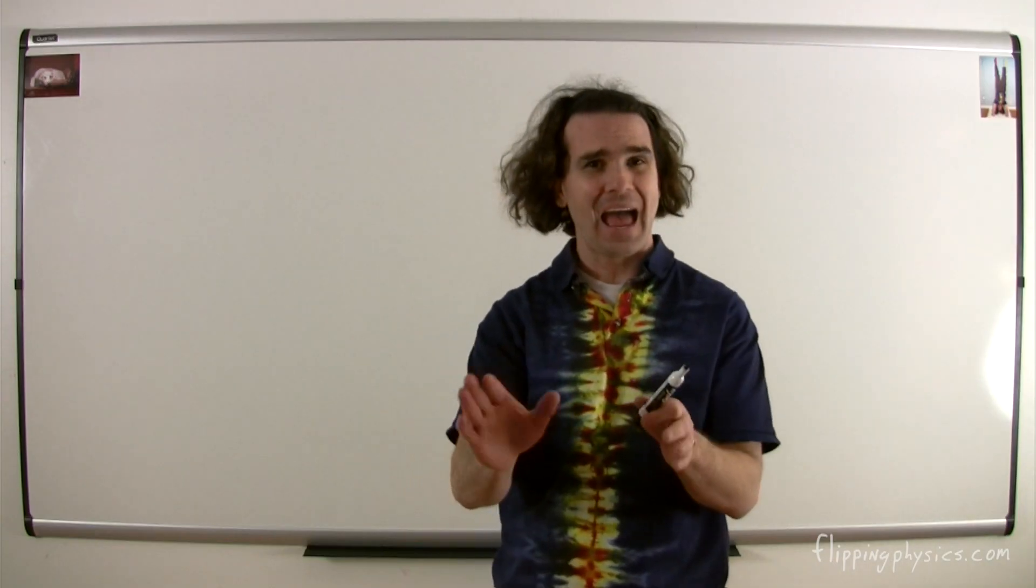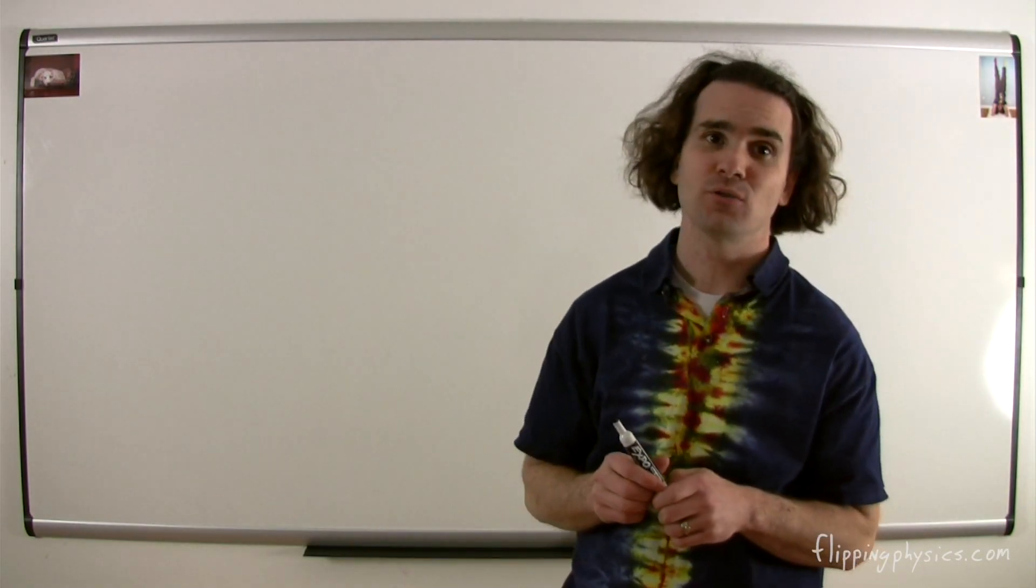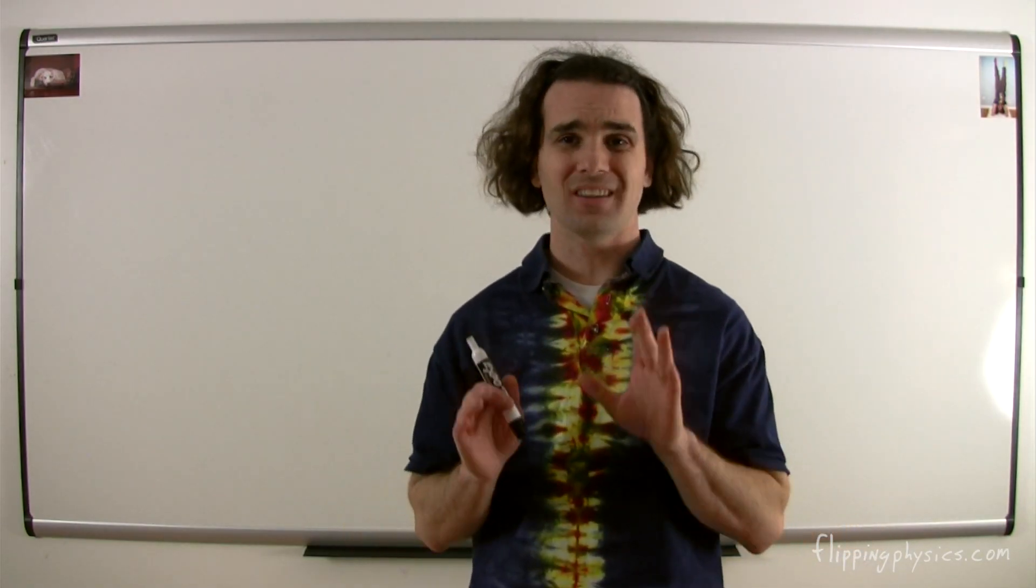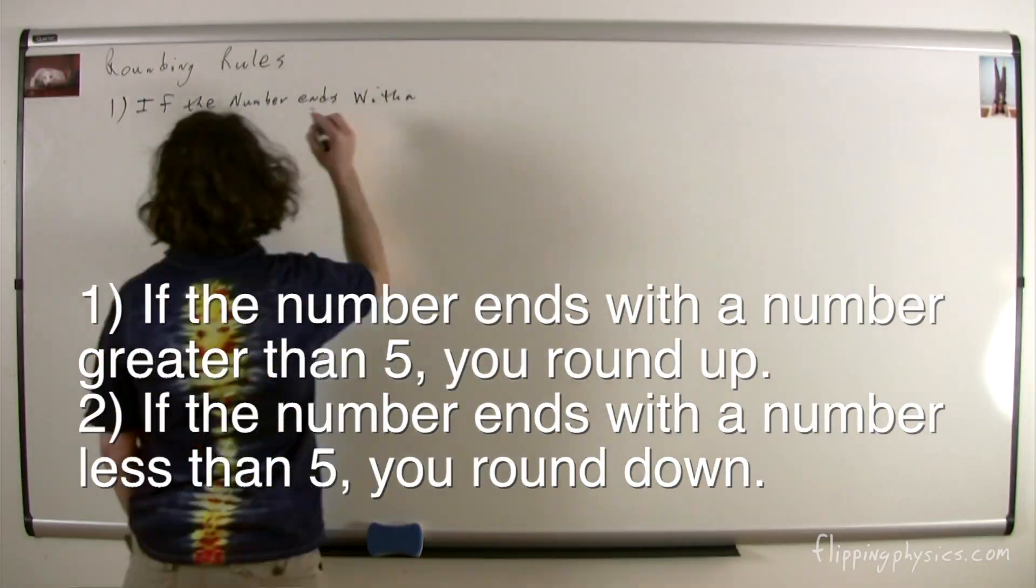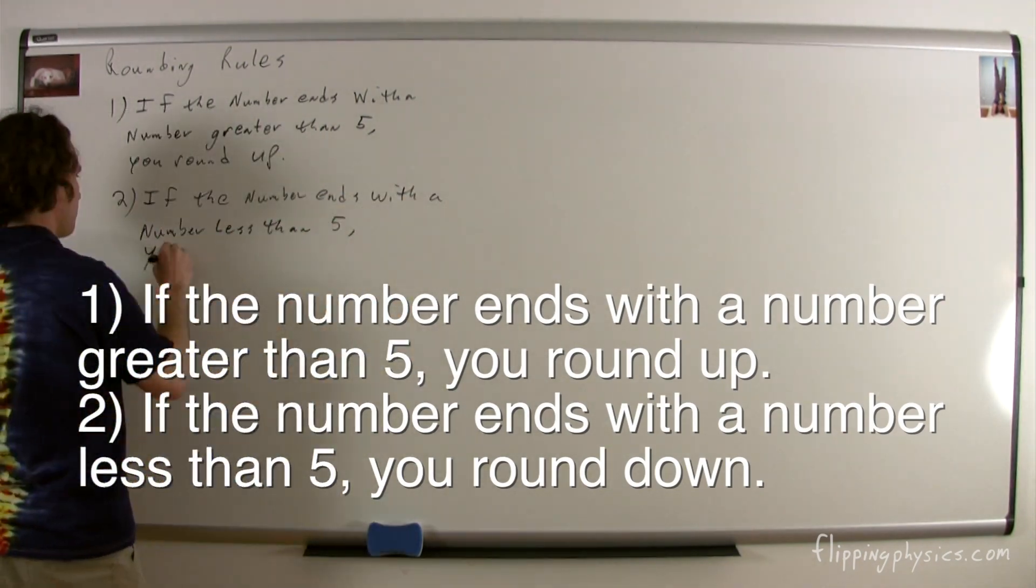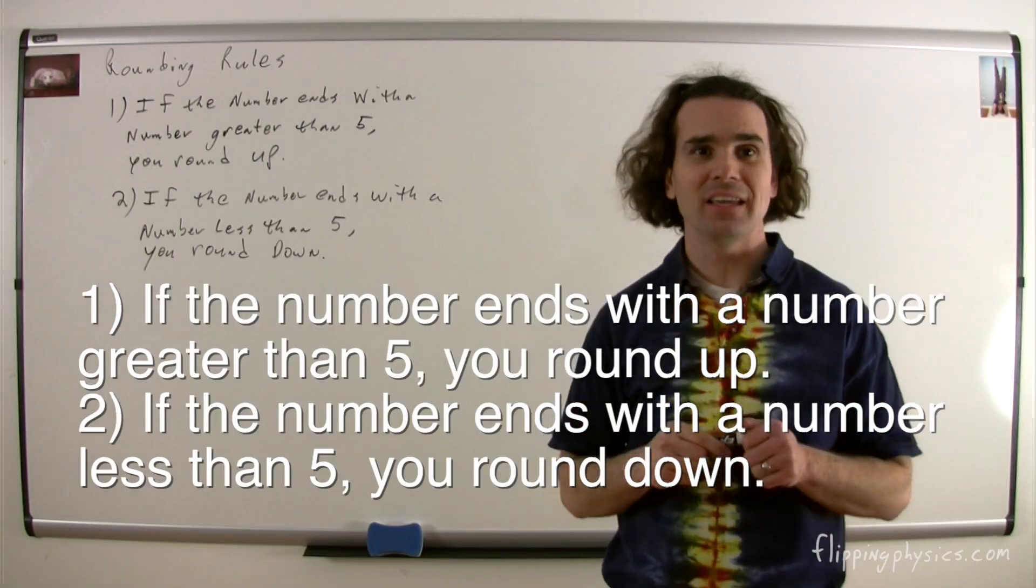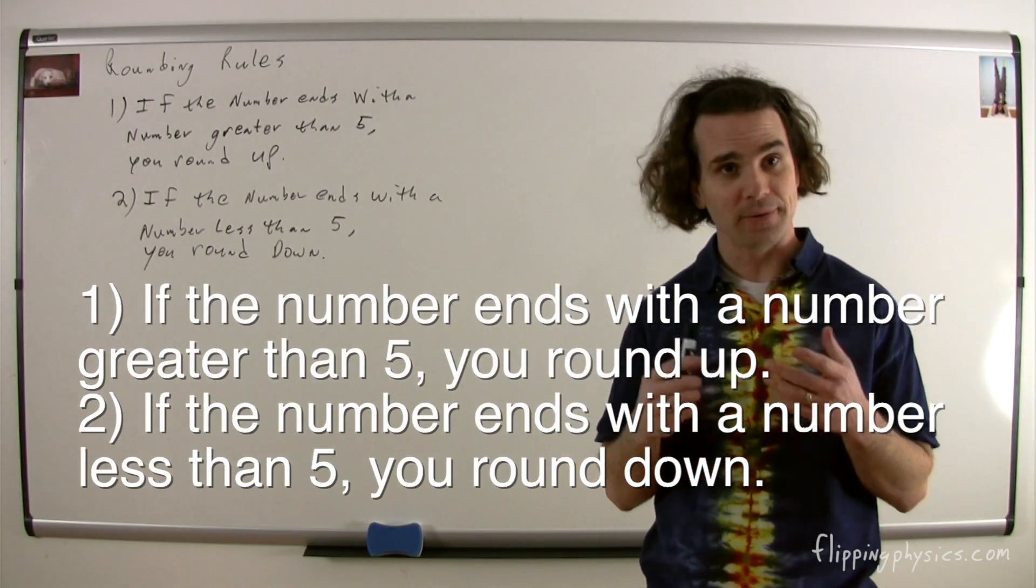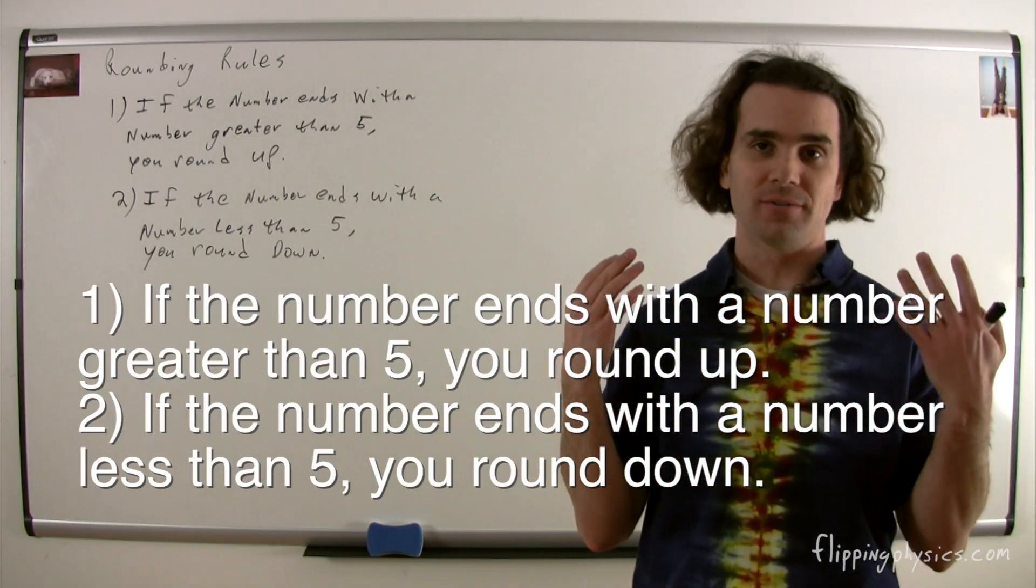Before we can talk about exactly how we work with significant figures in physics, we actually need to recall how to round. Basically, it works like this. I'll write the rounding rules on the board. The two rules of rounding are: if the number ends in a number greater than 5, you round up, and if a number ends in something less than 5, you round down.